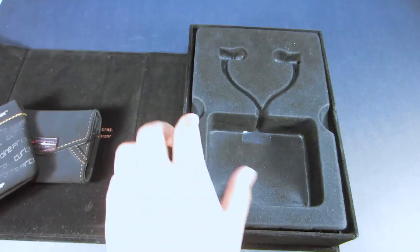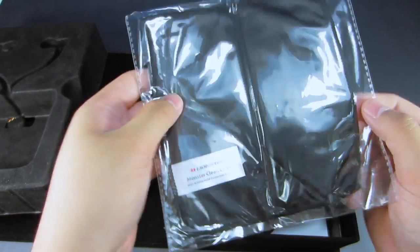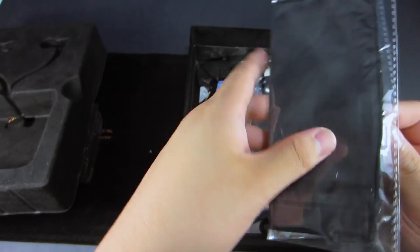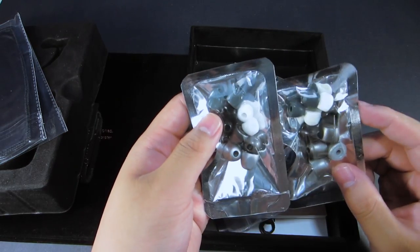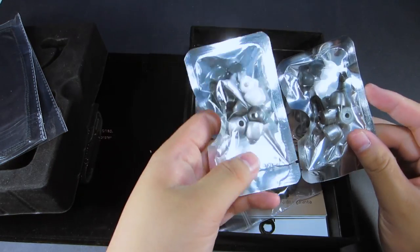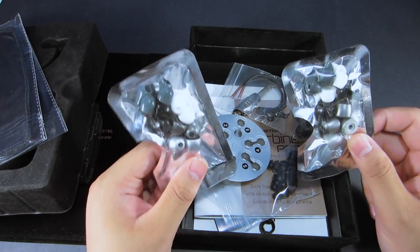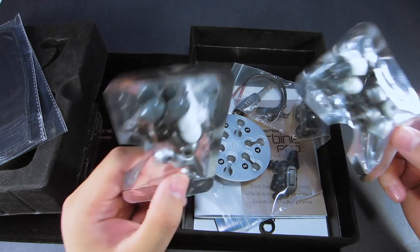Here we have a giant cleaning cloth. I'm not sure why Monster included this but it's very nice to have one if you ever need it. Here we have two packs of Monster super tips: the foam style super tips as well as the gel style super tips. Both very comfortable, I like them a lot.